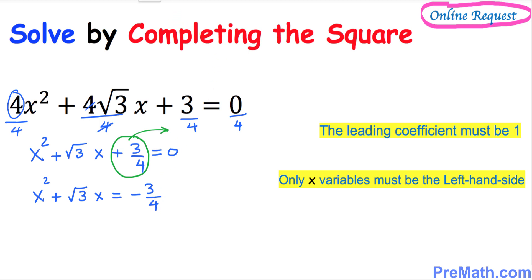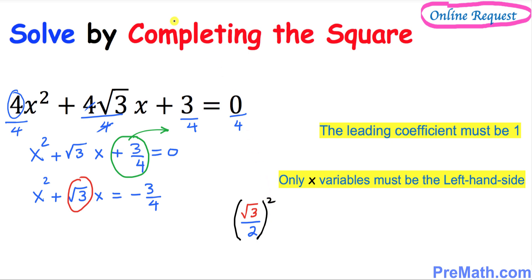Now the next step — focus on the coefficient of x. Don't worry about the sign, just this value: square root of 3. Next, divide this by 2 — always divide by 2 — and then take the square of that result. Whatever we get, we are going to add this quantity on both sides of the equation.